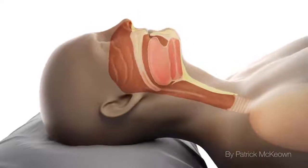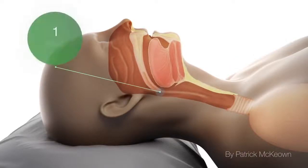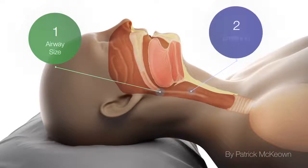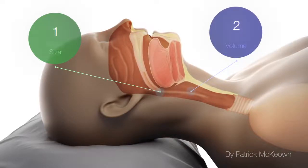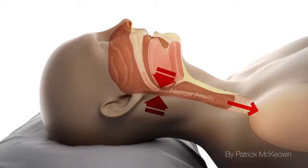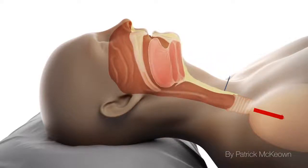In addressing obstructive sleep apnea, two factors need to be considered. The first is airway size, and the second is the amount of air that we habitually breathe. In relation to airway size, the narrower the upper airway, the greater the negative pressure as air is drawn into the lungs.